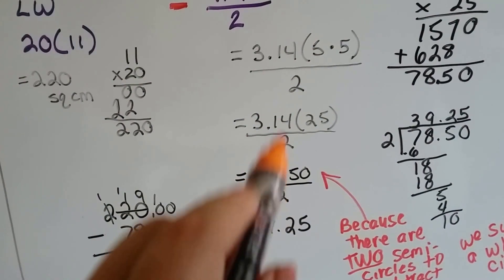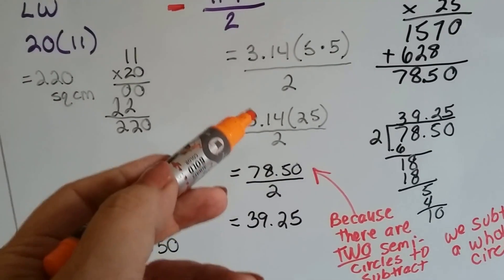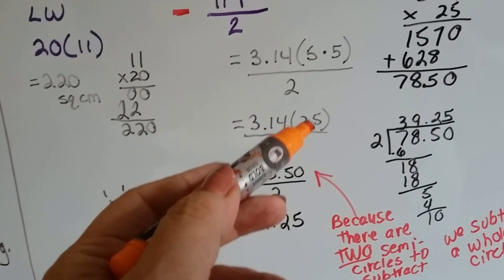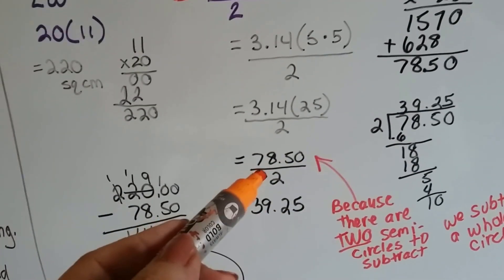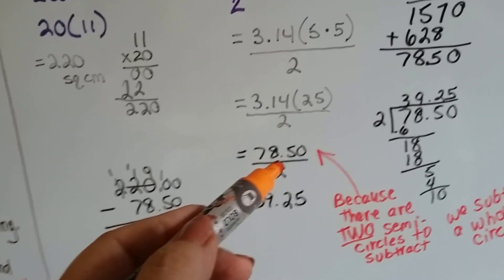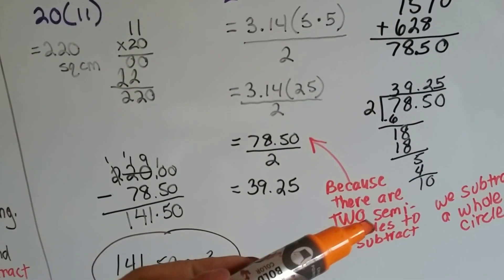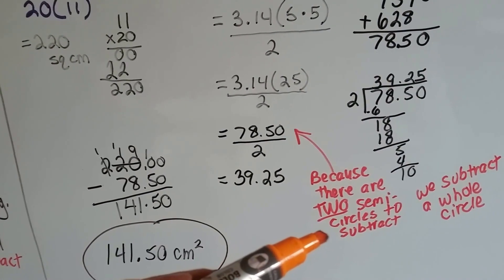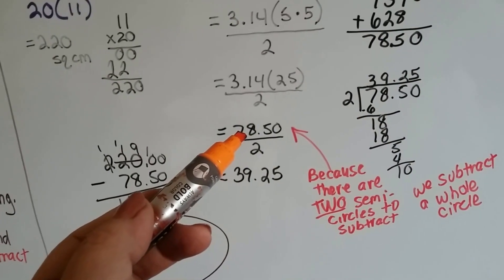We could divide this by 2 to find out the area of a semicircle. If we divide 78.50 by 2, it's going to give us the area of a semicircle. But because we have 2 semicircles to subtract, we can just subtract the whole circle, the whole 78.50.